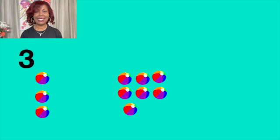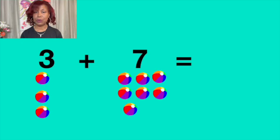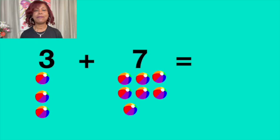Tres más siete igual a diez. Three plus seven equals to ten. Vamos a contar. Let's count. Uno, one. Dos, two. Tres, three.